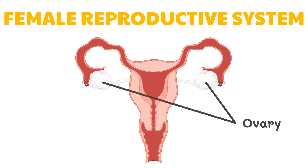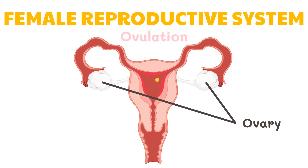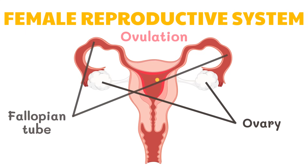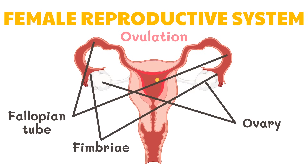There are two ovaries, each comparable to the size of an almond nut in every female. The ovary contains an ovarian follicle, which contains an oocyte or the female germ cell. When follicles mature, they expand and rupture to release the egg — this process is called ovulation. After ovulation, the remaining cells of the ruptured follicle transform into a glandular structure known as the corpus luteum. The fallopian tubes, also called uterine tubes, extend from the area of the ovaries to the uterus. The long and thin processes called fimbriae surround the opening of each uterine tube. Fertilization usually occurs in the part of the fallopian tube near the ovary.